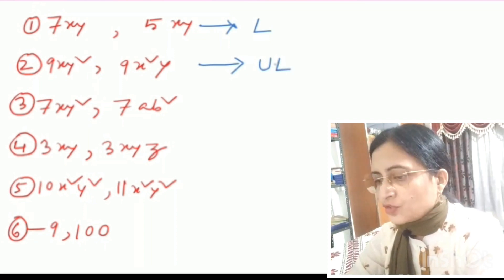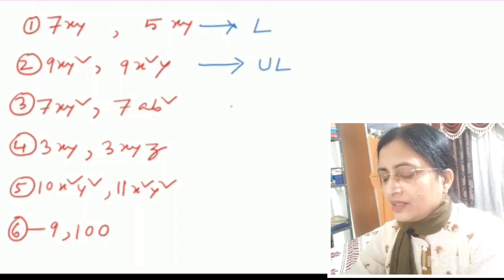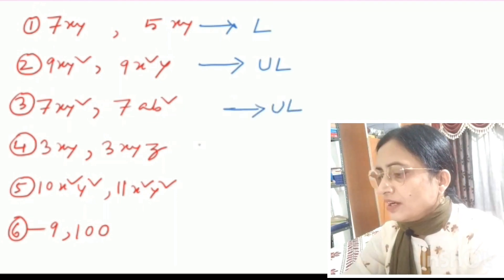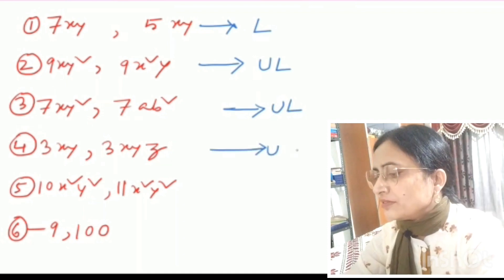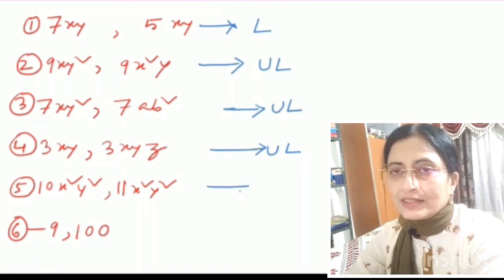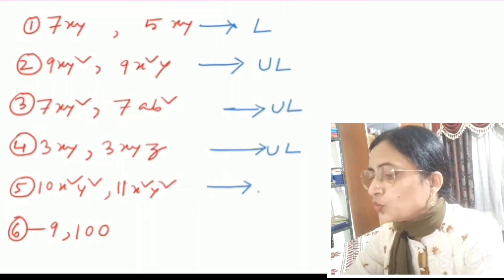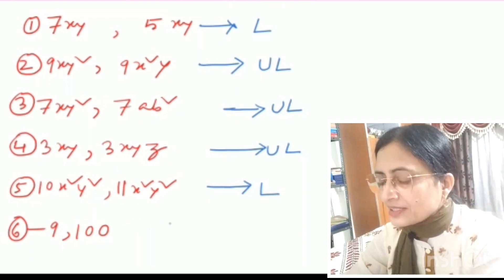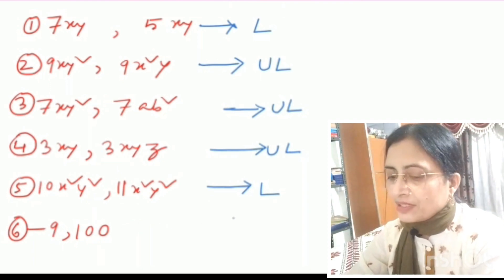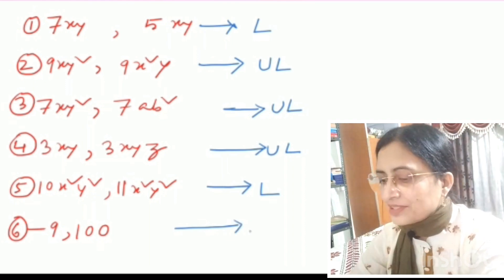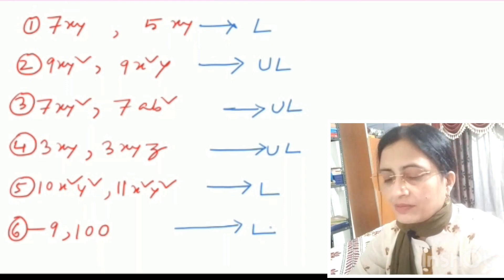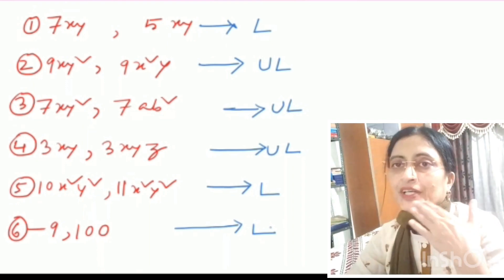Number three has different variables, so unlike. Number four also has different variables, so unlike. In example five, both terms have variables x and y with powers of 2, so they are like terms. In number six, both are constant terms — and all constant terms are like terms because they do not contain any variables.